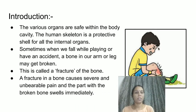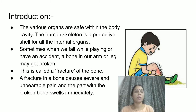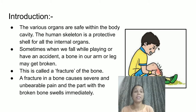Let us see the introduction. The various organs are safe within the body cavity; the human skeleton is a protective shell for all the internal organs. There are various organs in our body — for example, the brain is inside our skull, then we have the heart, pancreas, liver, kidneys, and stomach. All these delicate organs are protected inside the skeleton.